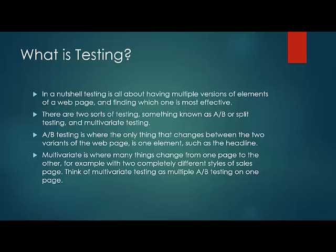There are two types of testing. There's what they call A-B testing or split testing, which is where you vary just one element on a page. So for example, if you were concentrating on the headline, you would change the text on the headline to test which headline is the most effective. Whereas with multivariate testing, that's where you vary a number of things between pages.